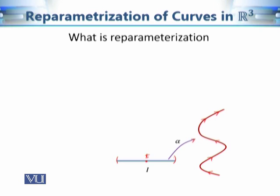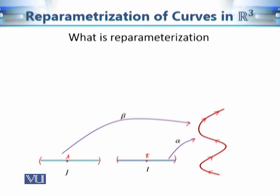Let's look at this situation more precisely. A curve in R³ is a function alpha from an open interval I to R³. Now suppose beta is another way of tracing the same curve, defined on a different open interval J. The points obtained are the same curve, but differences can arise: for example, beta might go in the opposite direction from alpha, or in the same direction but at a different speed.